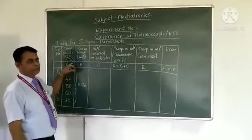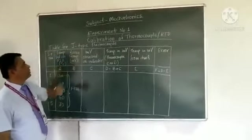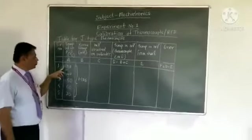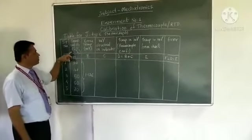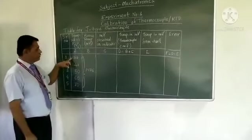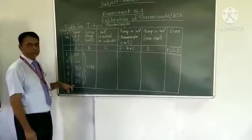This is the table for J type thermocouple. In this we have to take readings, that is temperature set on RTD: temperature 30, 40, 50, 60, and 70 degrees centigrade.